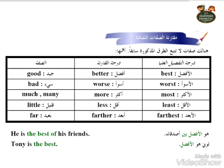We also have some irregular adjectives: good, better, best; bad, worse, worst; much/many, more, most; little, less, least; far, farther, farthest.